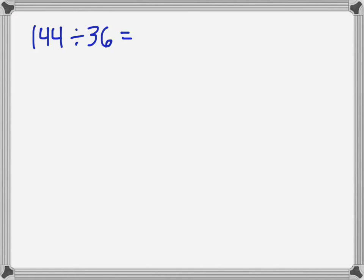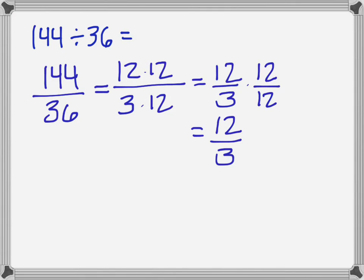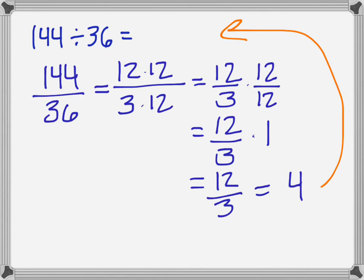Here's another example: 144 divided by 36. You probably don't have this one memorized, but I can rewrite this as a fraction. I know that 144 is 12 times 12, and that 36 is 3 times 12. The identity property allows me to rewrite this — 12 over 12 is 1 — so that's equivalent to 12 thirds, and 12 divided by 3 equals 4. So the answer to the original problem is 4.